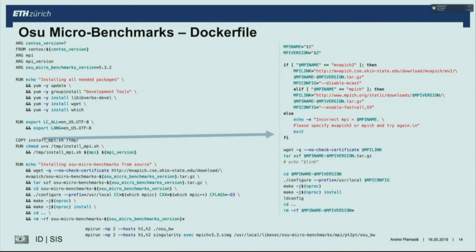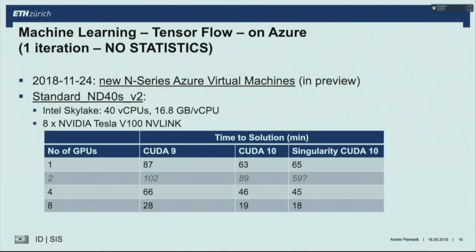For GPU workloads, the story is similar. Here are some preliminary TensorFlow results on Azure — just one iteration, measuring time to solution. We used the N-series from Azure, which has eight Tesla GPU cards on one VM. We first tested with CUDA 9 on the host, then upgraded to CUDA 10 and noticed an improvement in time to solution. We then put it in a container and observed no degradation in performance.